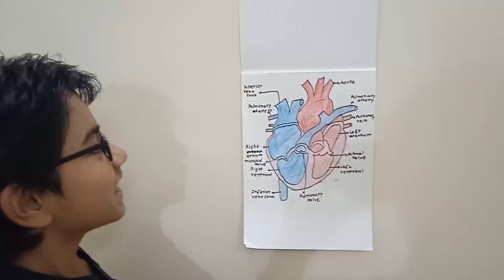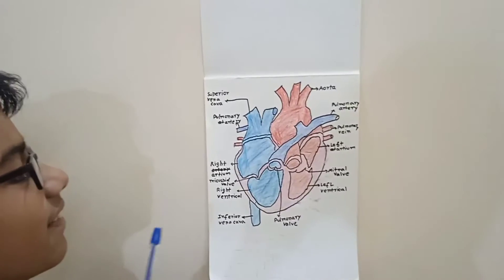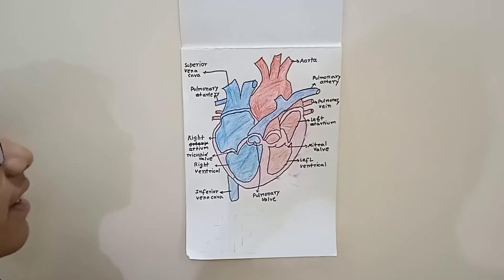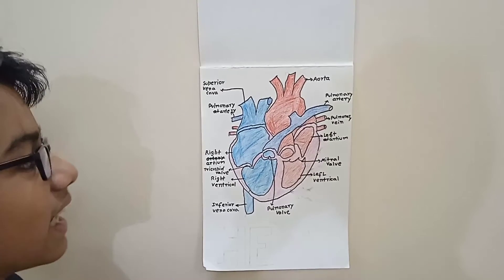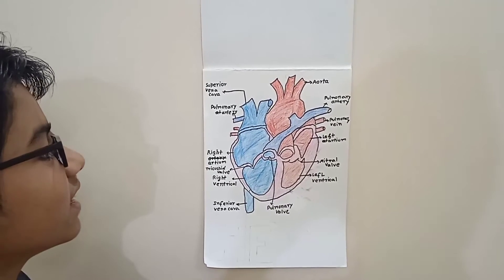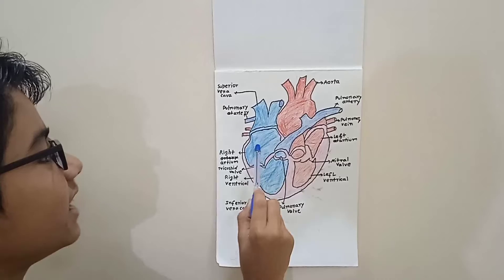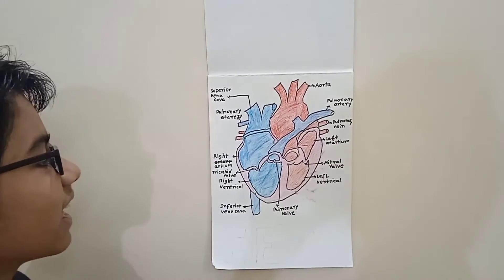So see, this is a heart. We will see the parts of our heart. First we will see what are the chambers in our heart. There are four chambers. These two chambers are called right and left atrium and these two chambers are called right and left ventricle.